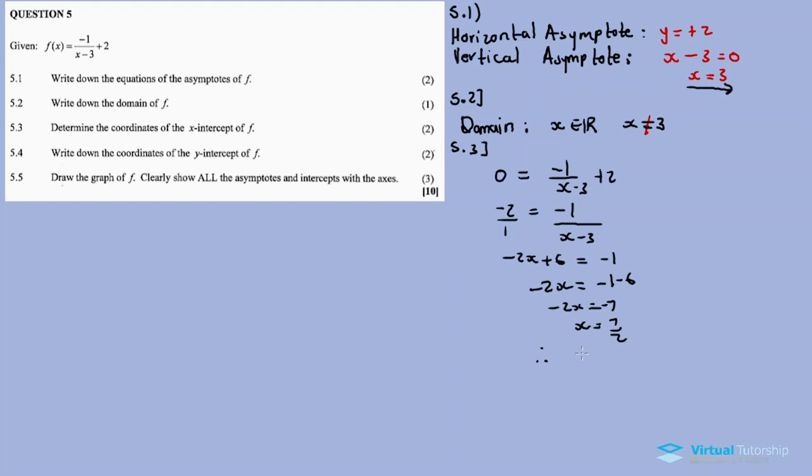X equals 7 over 2. So the x-intercept is (7/2, 0).